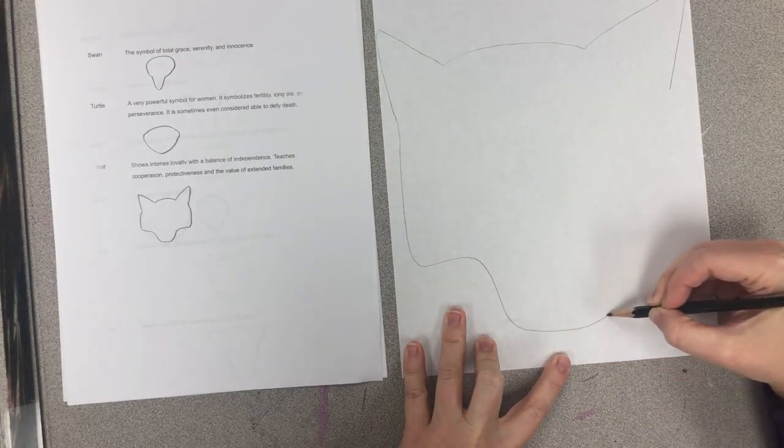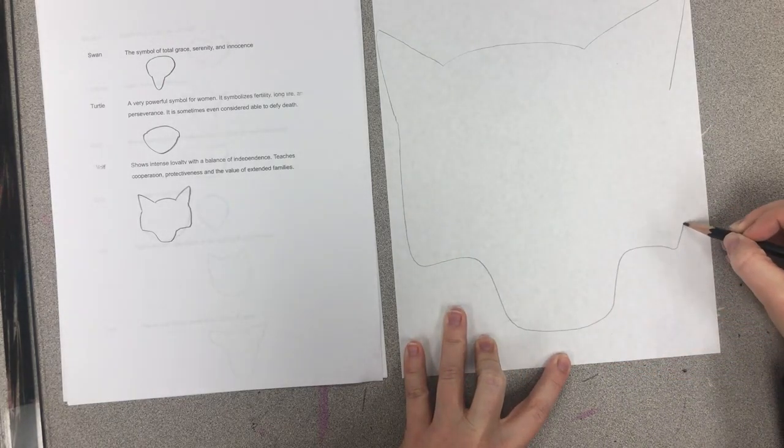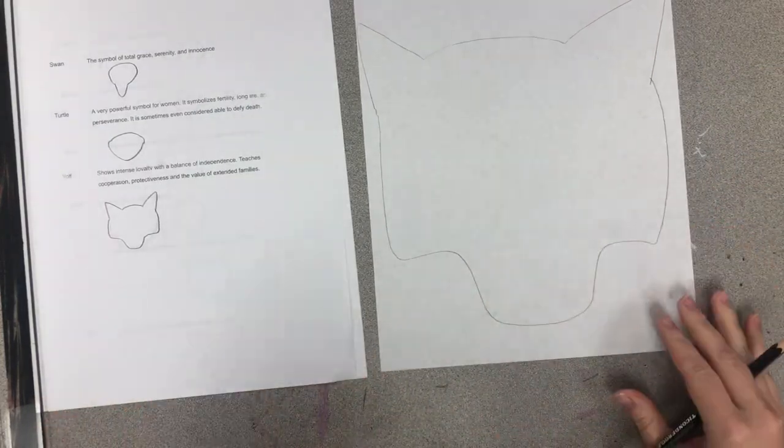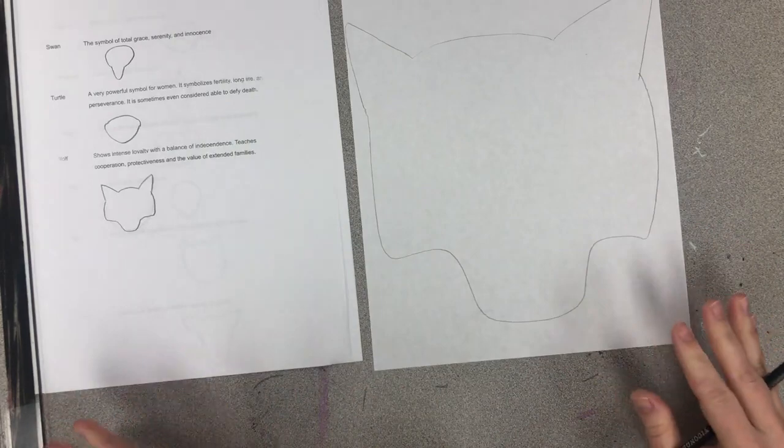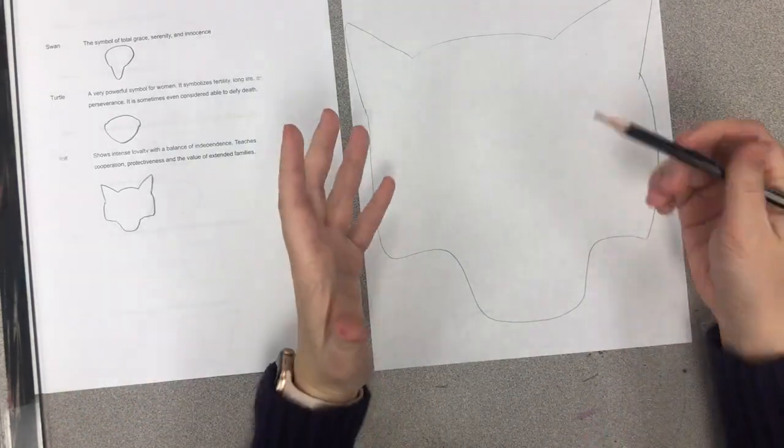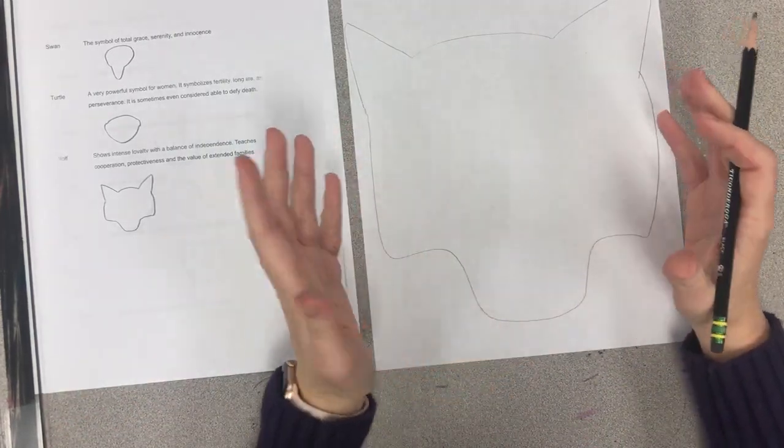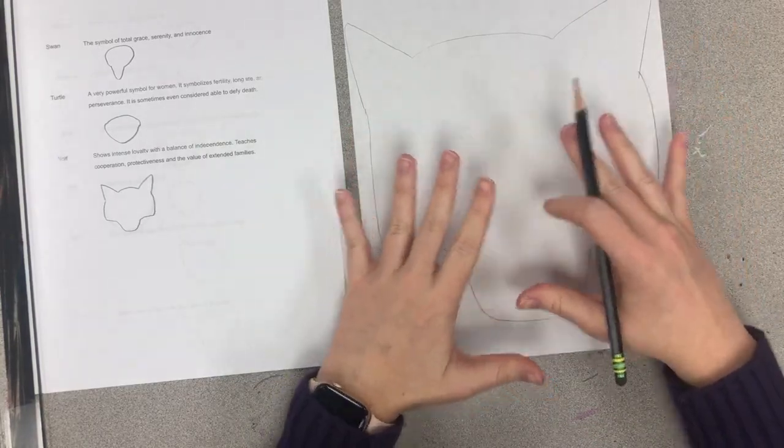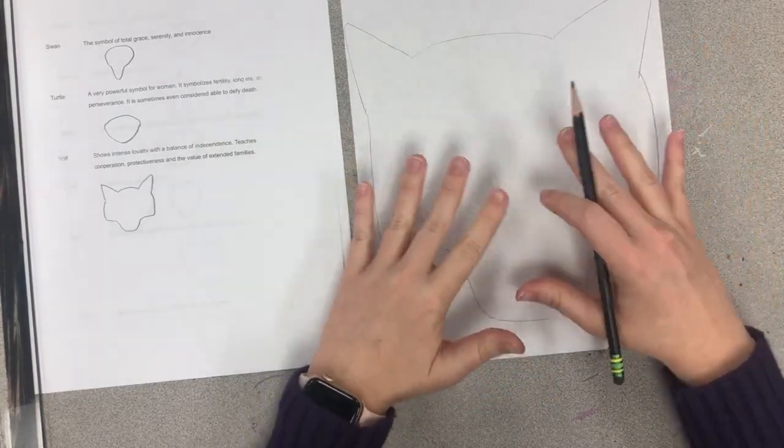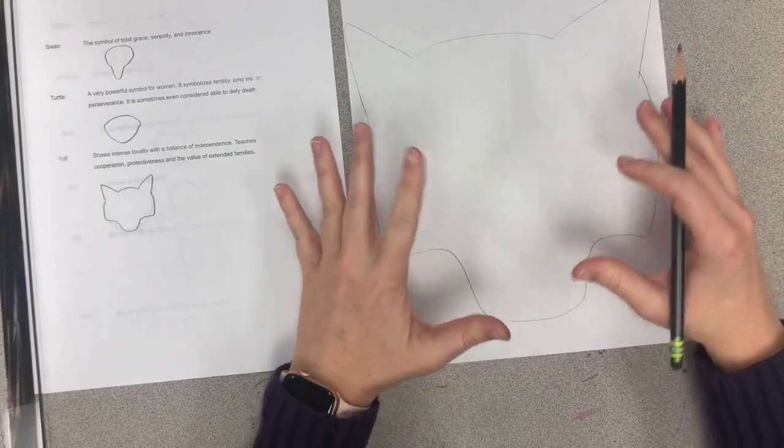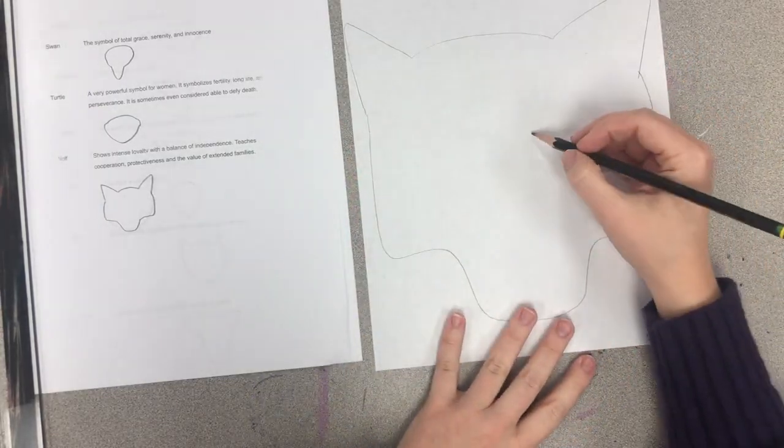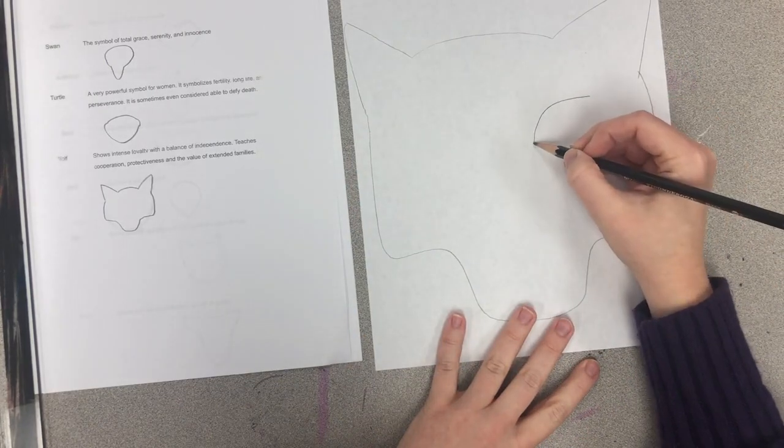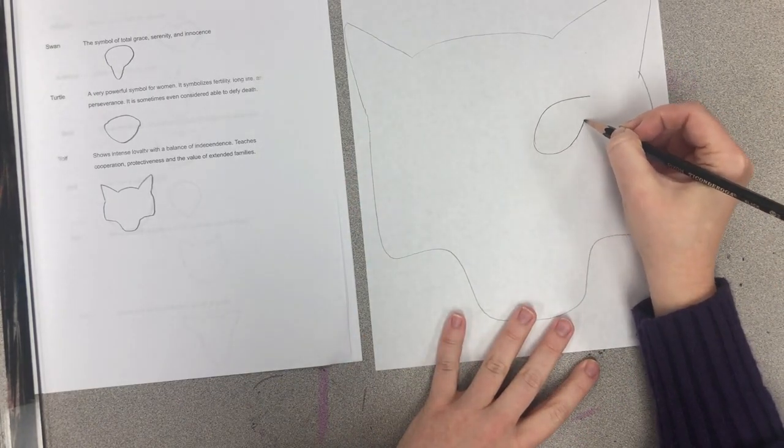I've got the shape of the head here, then I'm going to start to add details. So when I'm drawing this I want to keep in mind that Native American style, very simple. They didn't have five billion details, really simple patterns and shapes. I also want to keep in mind symmetry.